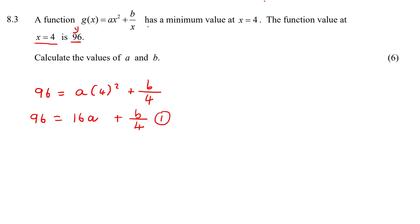They're telling us that it has a minimum value. How do we normally find minimum value? You take the first derivative and you make that equal to zero.